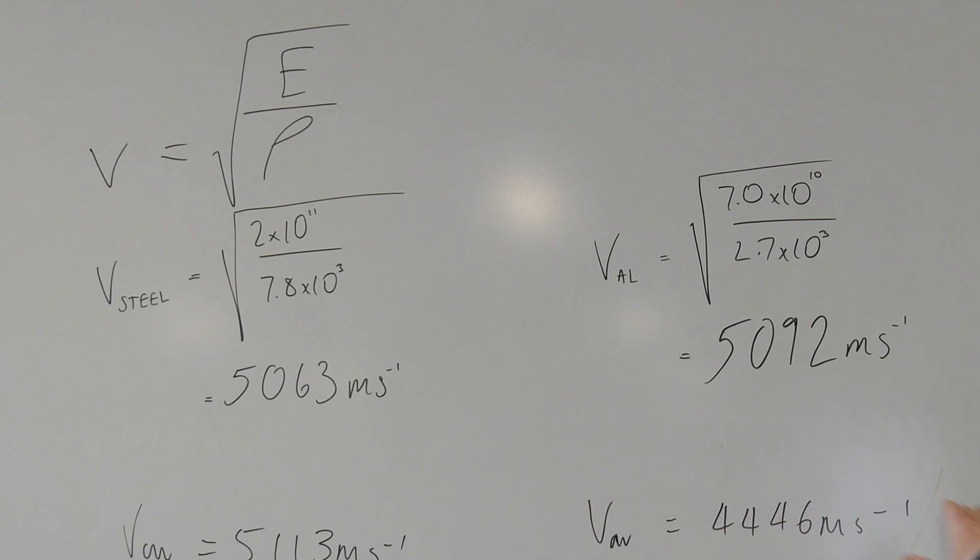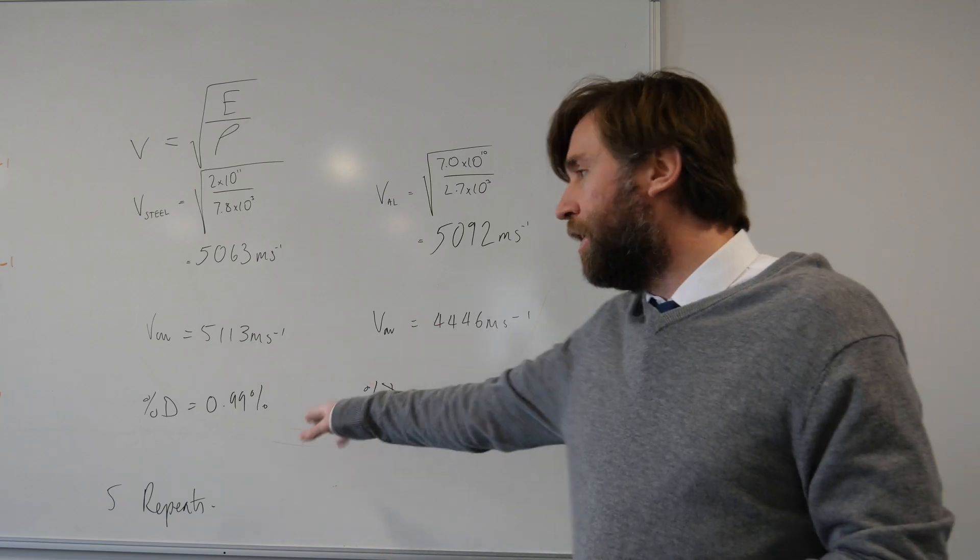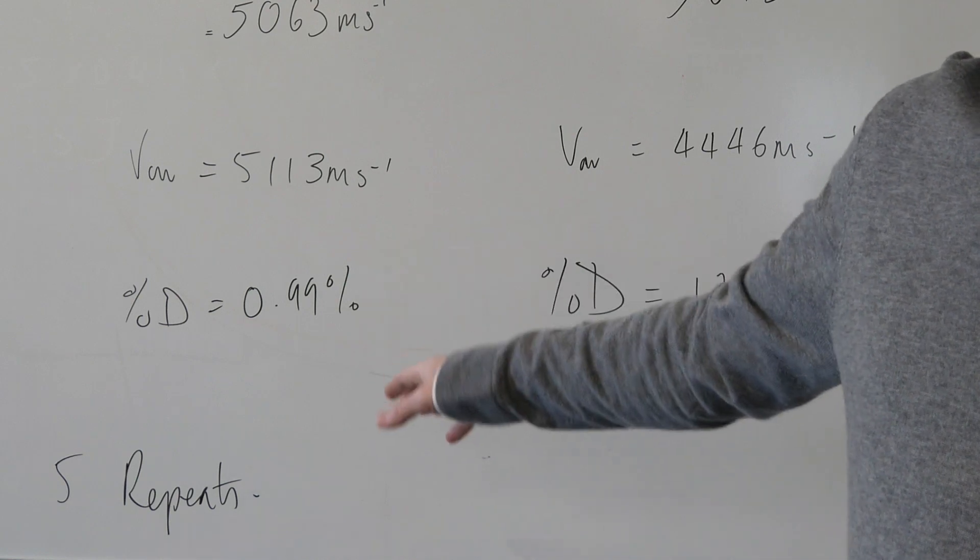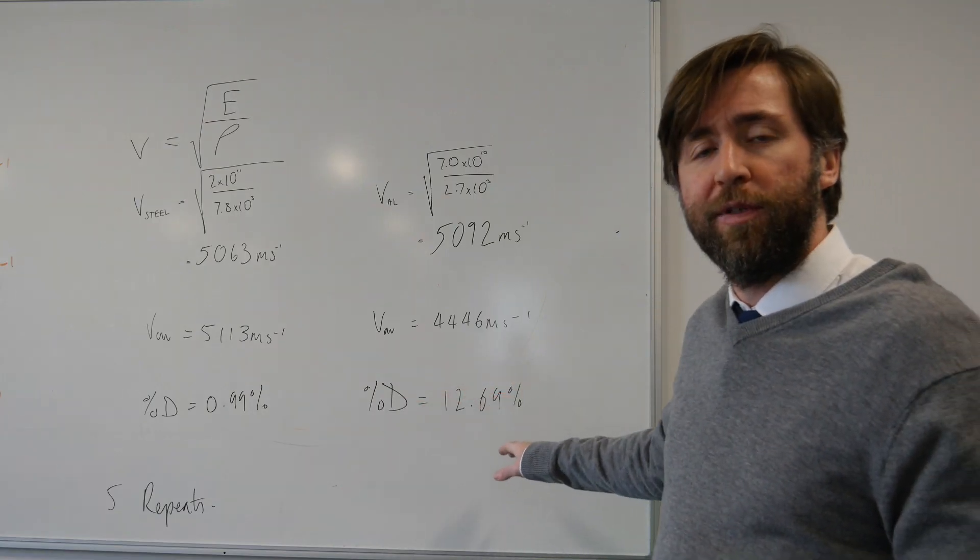And then this is our measured values over five repeats. We've got really close to the wave speed for steel, so that's worked out really accurately, but quite far away from the wave speed for aluminium.